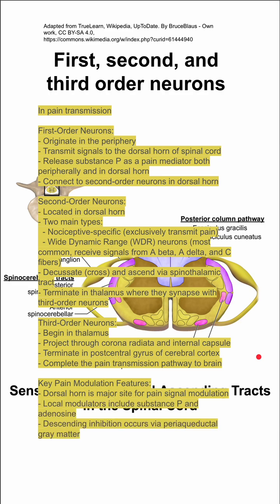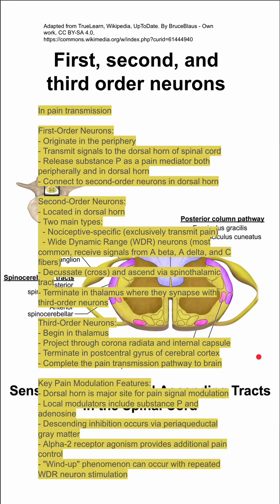Some key points: the dorsal horn is the major site for pain signal modulation and local modulators include substance P and adenosine. Descending inhibition occurs via the periaqueductal gray matter, and alpha-2 receptor agonism provides additional pain control. There is also a wind-up phenomenon that occurs with repeated stimulation of the wide dynamic range neurons.